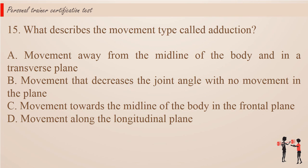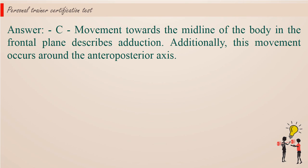Question 15. What describes the movement type called adduction? a. Movement away from the midline of the body and in a transverse plane. b. Movement that decreases the joint angle with no movement in the plane. c. Movement towards the midline of the body in the frontal plane. d. Movement along the longitudinal plane. Answer: c. Movement towards the midline of the body in the frontal plane describes adduction. Additionally, this movement occurs around the anteroposterior axis.